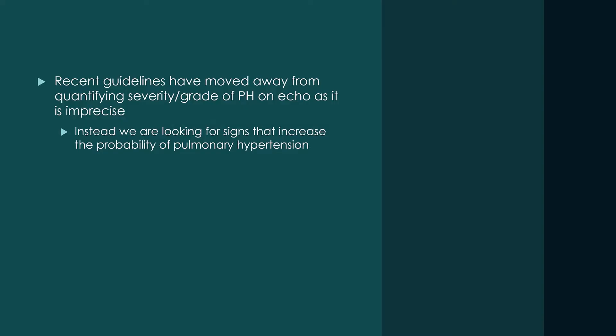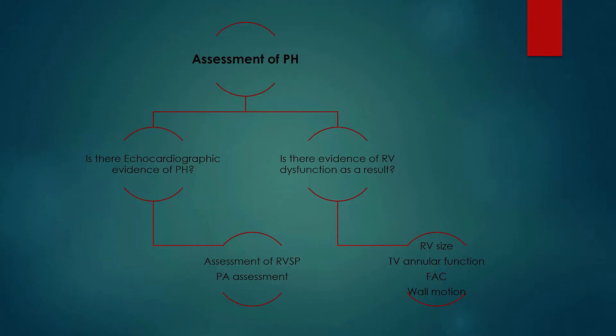Today, we'll be focusing on markers of pulmonary hypertension which can be assessed by echocardiography. Although categories and criteria exist for grading severity, recent guidelines have generally moved away from these imprecise measures. Instead, we will be looking for markers that either increase or decrease the probability of pulmonary hypertension being present. This talk will be divided into two parts: first, how we can assess for the presence of pulmonary hypertension on echocardiography, and second, the sequelae of pulmonary hypertension — namely right ventricular dysfunction and failure — which is of particular interest in the ICU.